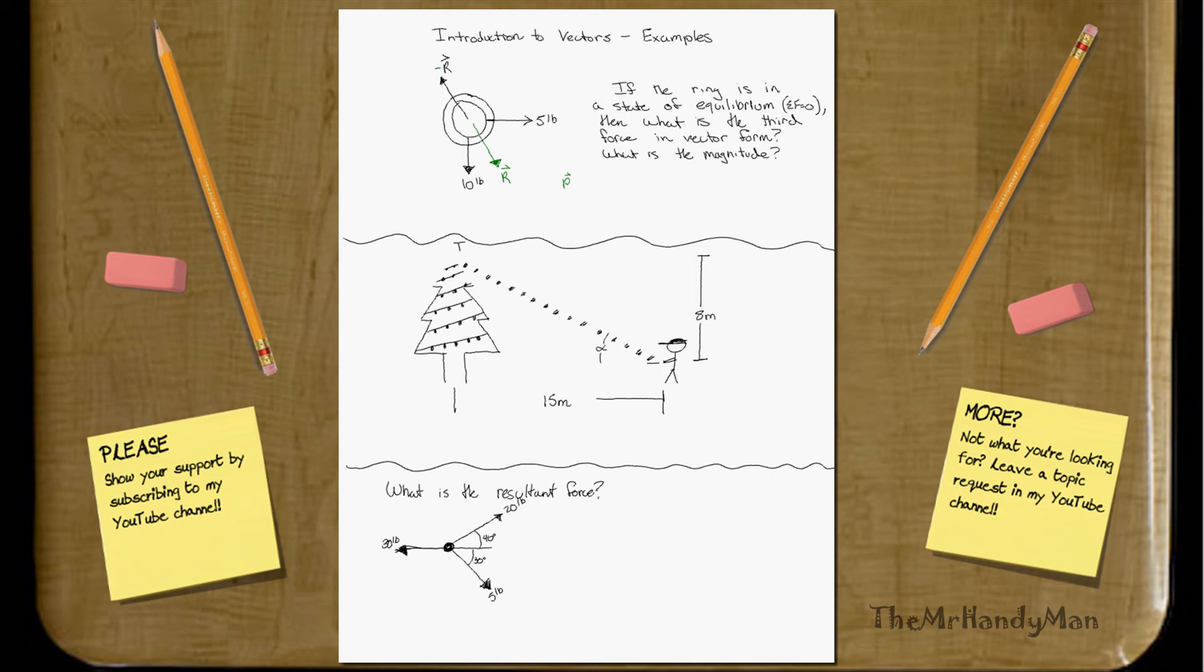And r is going to equal, if we use this x-y-axes, this would be 5i minus 10j. Well, all we need to do is, we know that r, essentially plus negative r, equals zero.